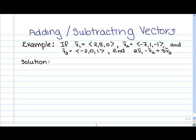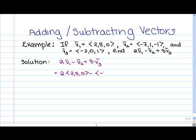So hopefully you've had a chance to try this. Let's go ahead and take this up together. What we want to find is 2v1 minus v2 plus 3v3. Let's do the scalar multiplication first: 2 times the vector (2, 5, 0), minus the vector (-7, 1, -1), plus 3 times the vector (-2, 0, 1).